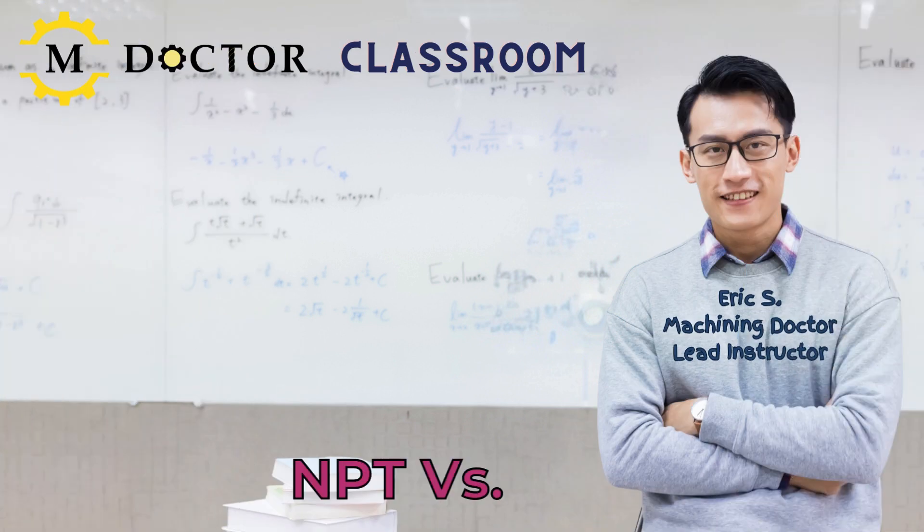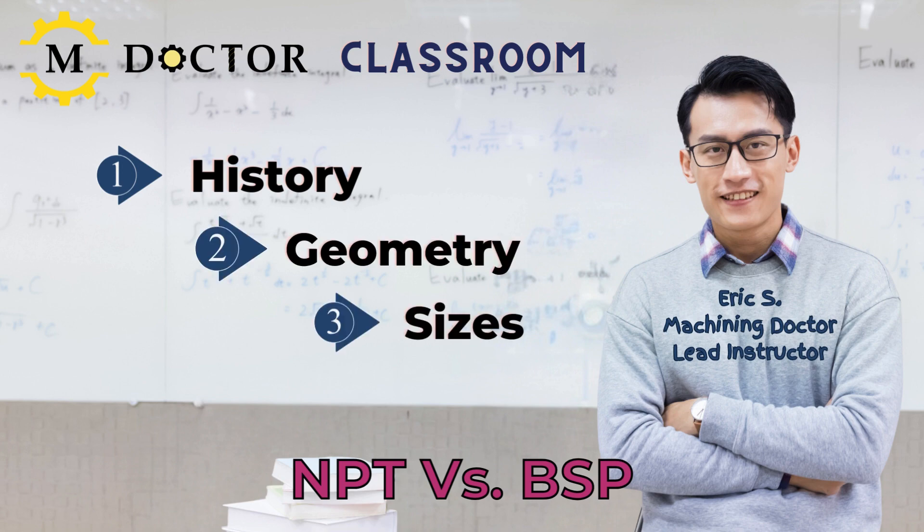We will look at the differences from three aspects: history, geometry, and size range.